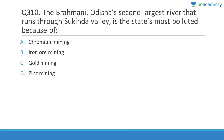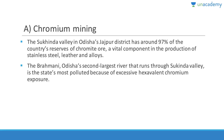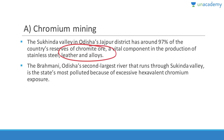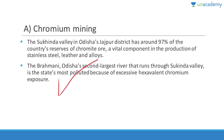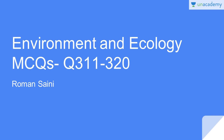Question 310: The Brahmani, Odisha's second largest river running through Sukinda valley, is the state's most polluted because of chromium mining. Answer is A. Sukinda valley in Odisha's Jajpur district holds about 97% of India's chromite ore reserves — vital for stainless steel and leather alloys — and the river suffers from excessive hexavalent chromium exposure.